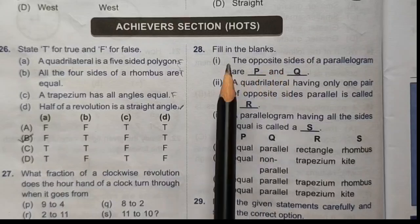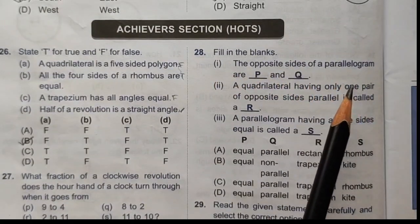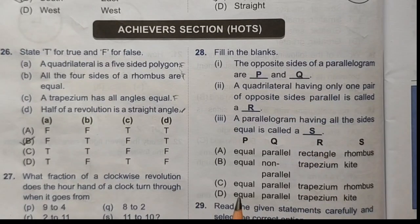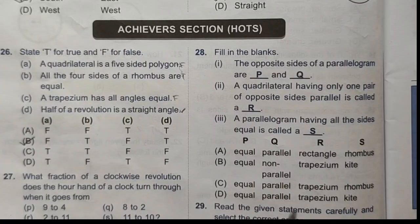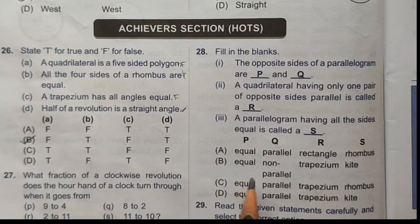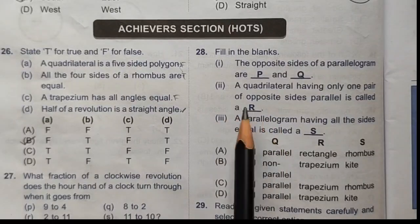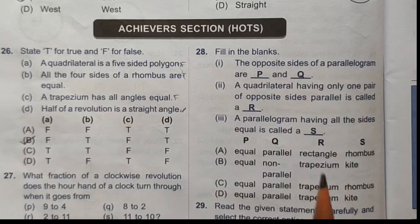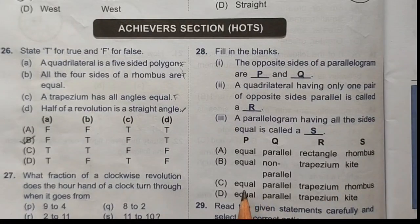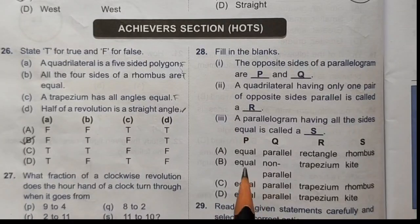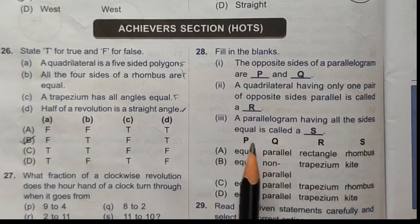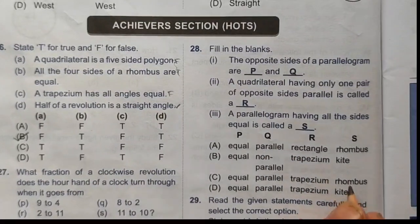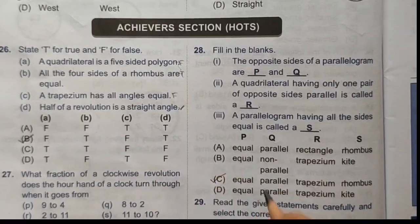Twenty-eighth question — fill in the blanks. First: The opposite sides of a parallelogram are equal and parallel. Second: A quadrilateral having only one pair of opposite sides parallel is called a trapezium. Third: A parallelogram having all sides equal is called a rhombus. The correct answer is option C.